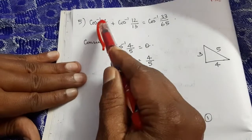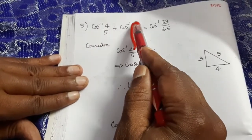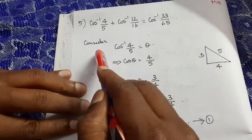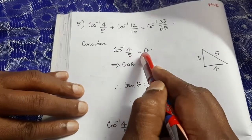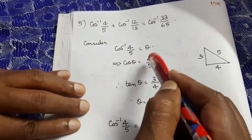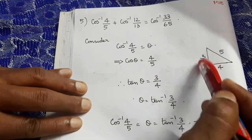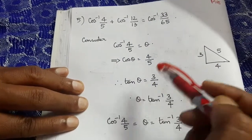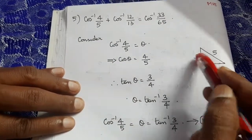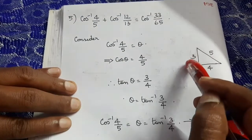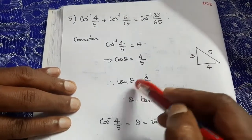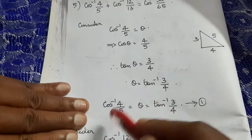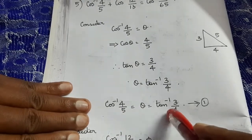Question 5: Prove cos⁻¹(4/5) + cos⁻¹(12/13) = cos⁻¹(33/65). Let θ = cos⁻¹(4/5), so cos θ = 4/5. In a right-hand triangle, adjacent = 4, hypotenuse = 5. Opposite = √(5² − 4²) = 3. So tan θ = 3/4, giving cos⁻¹(4/5) = tan⁻¹(3/4).